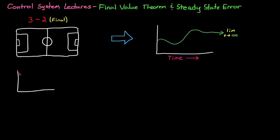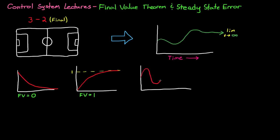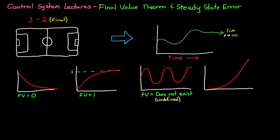We can draw a few notional plots of outputs to illustrate what the final values would be. In this first example, the output approaches 0 as time approaches infinity, so we would say that the final value is 0. In this case, the final value of the function is 1. And if you have a function that oscillates for all time, then there is no final value — it continues to change forever, so the final value is undefined. And finally, if the function continuously increases, then again there is no final value; you could say that the final value in this case is infinite.